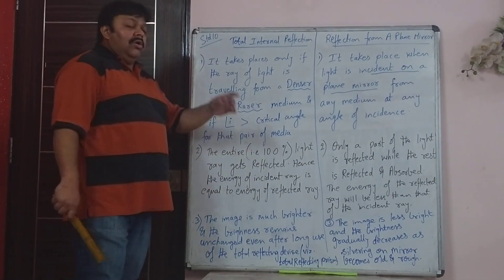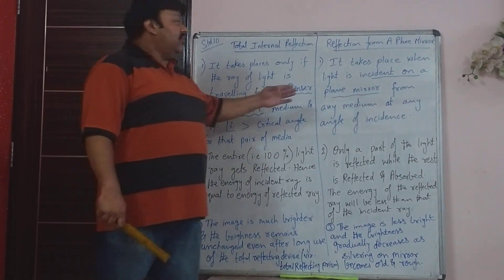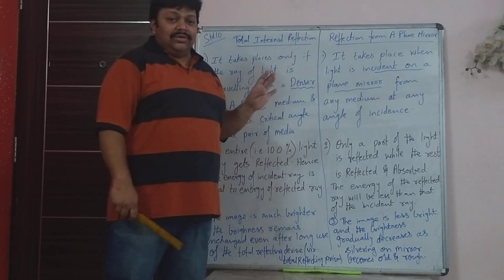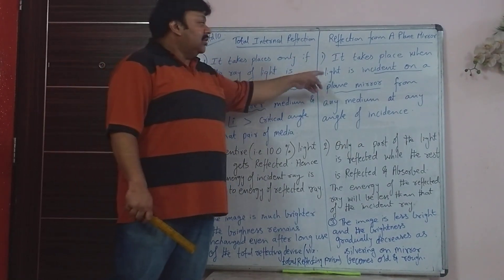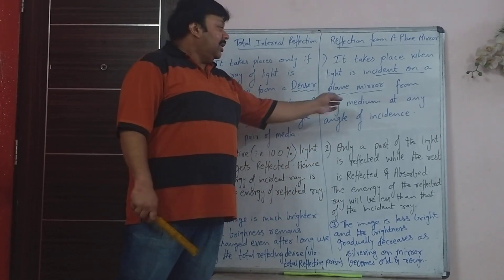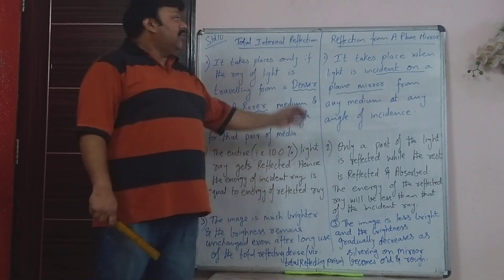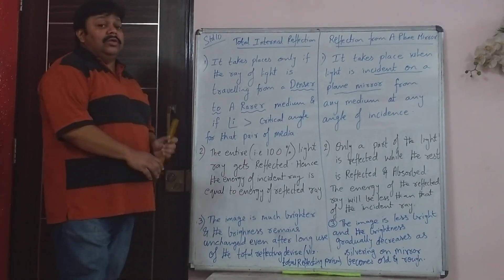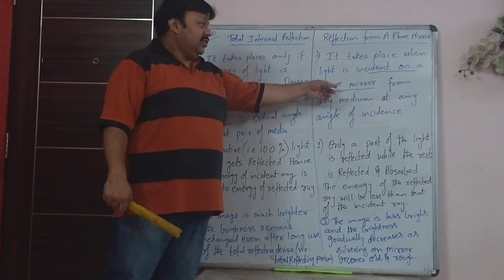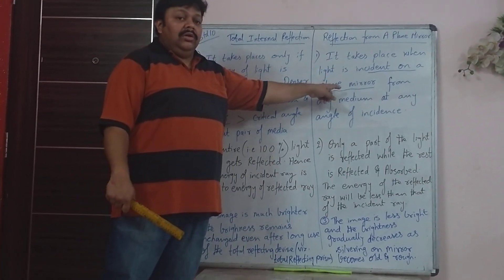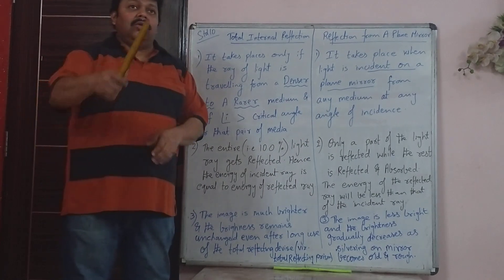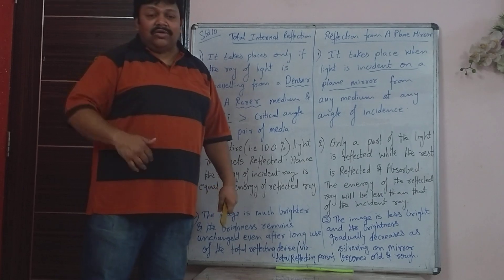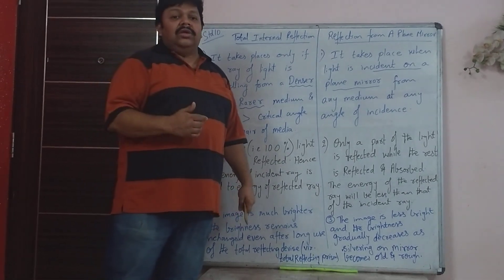Whereas for reflection, all that is required is that the incident ray should be falling on a plain mirror — from any medium and at any angle of incidence. As long as the incident ray of light falls on a plain mirror from any medium and any angle of incidence, then reflection will happen. So all you need is the ray of light to fall on the mirror. That is why we use a mirror — you can see yourself whenever you are standing anywhere in front of it.